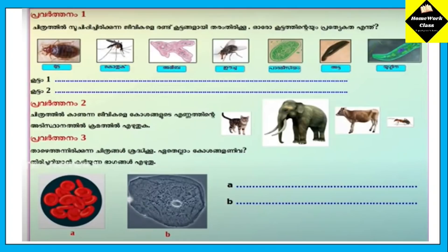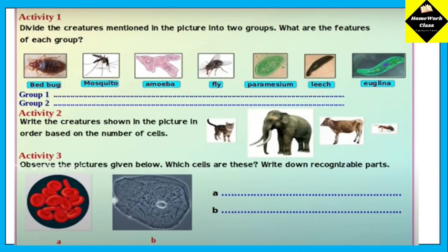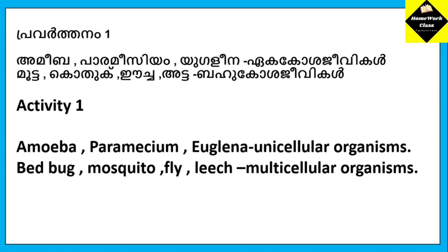Amoeba, Paramecium, and Euglena. Divide the creatures mentioned in the picture into 2 groups. What are the features of each group? The organisms listed include: bed bug, mosquito, amoeba, fly, paramecium, leech, and euglena. Amoeba, paramecium, and euglena are unicellular organisms. Bed bug, mosquito, fly, and leech are multicellular organisms.